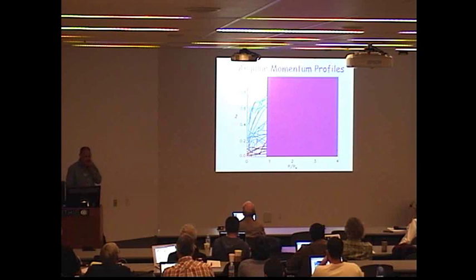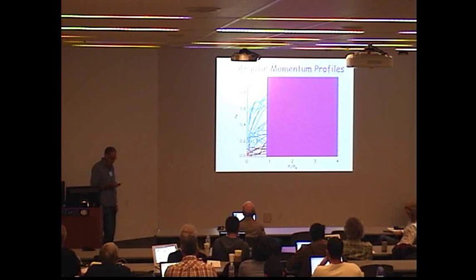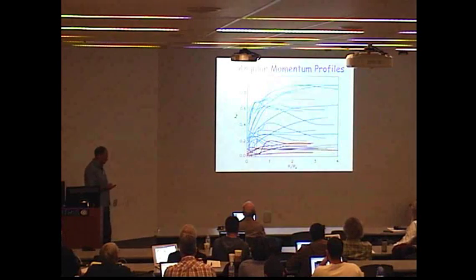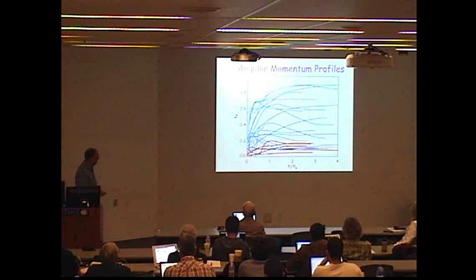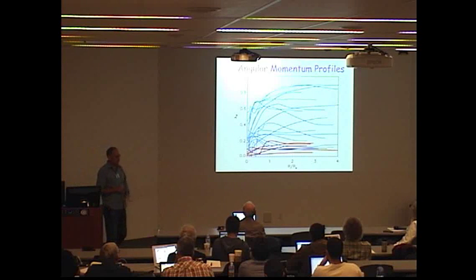What happens when you probe out to three or four effective radii? That's what happens. For our sample, the slow ones remain pretty slow. The fast ones, well, some of them remain fast or get even faster, but occasionally a few of them decline, so the centrally fast rotators have a diversity of angular momentum profiles.